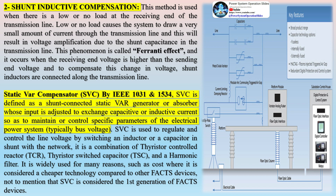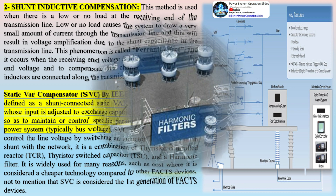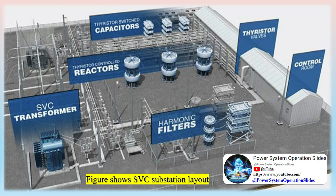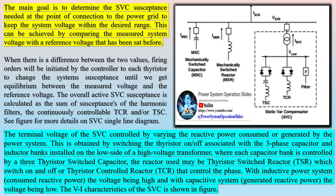In shunt compensation, FACTS devices are connected in parallel with the transmission line. They act as a controllable current source, injecting a reactive current into the system to stabilize the voltage. This can be represented by injecting negative or positive reactive power (VAR) to the system based on the connected loads and losses along the transmission line. The shunt compensator devices can be installed in the middle of the transmission line, splitting it into two separate parts, where the voltage at the divided point can be controlled and regulated to match the voltage at the end of the line, maximizing the transmitted power.